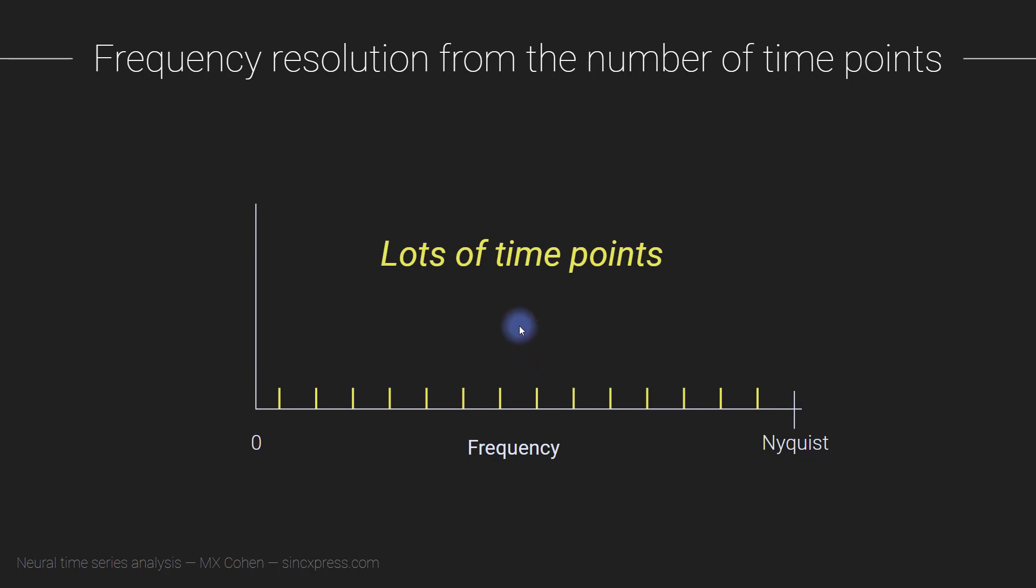We can take this to an even more extreme. We can take an even longer segment of data, keeping the sampling rate the same. Now we have buckets of time points, lots and lots of time points, and that gives us a very fine frequency resolution, a lot of frequency points between zero and Nyquist.